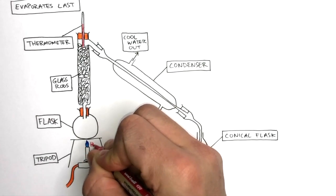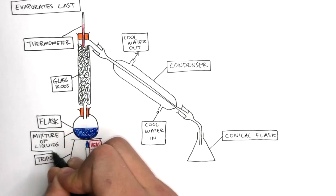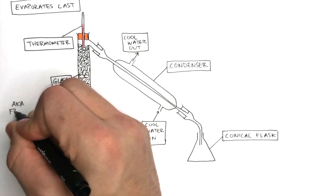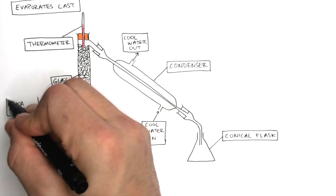A Bunsen burner heats the mixture of liquids, which have different boiling points. These different liquids are also known as fractions, as a fraction is a liquid with the same boiling point.